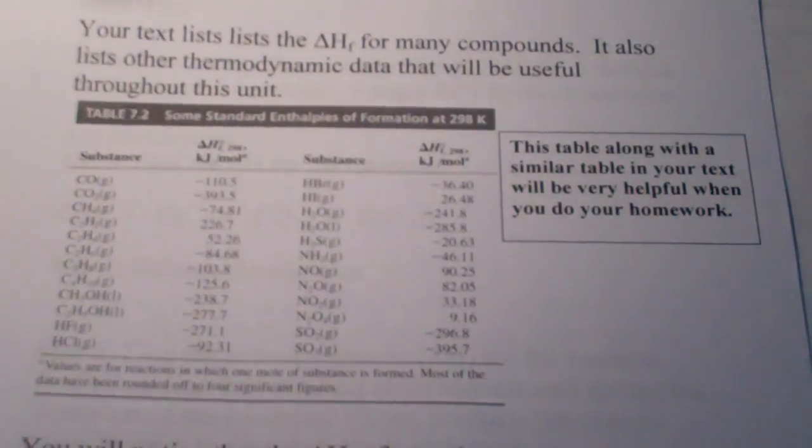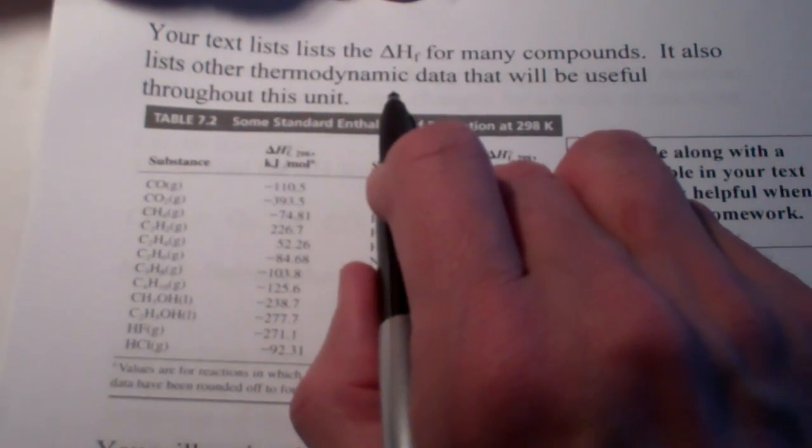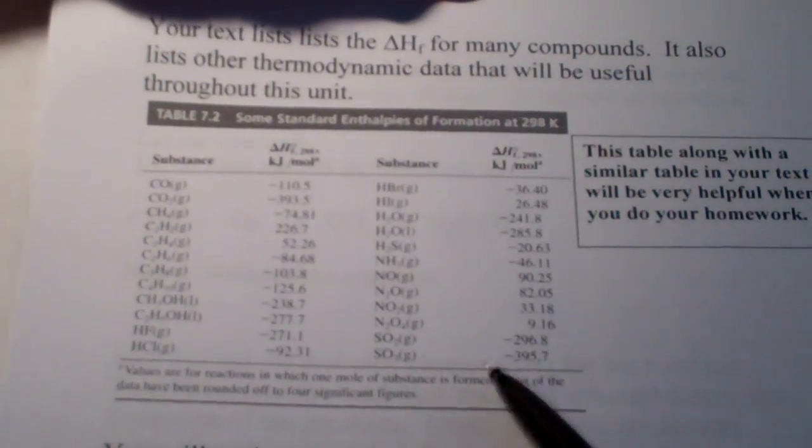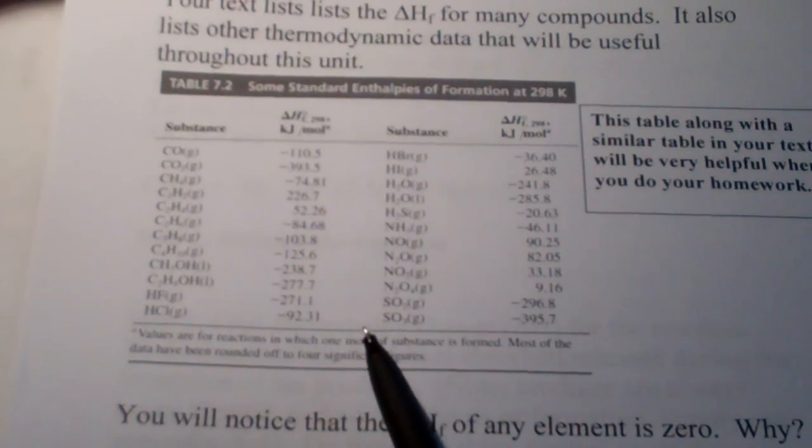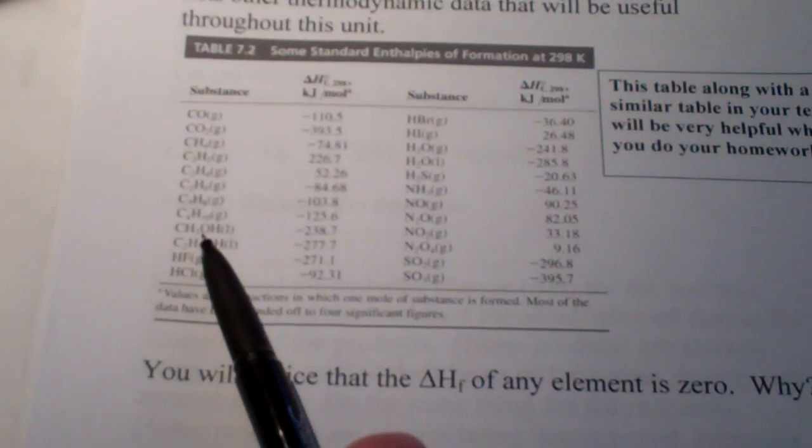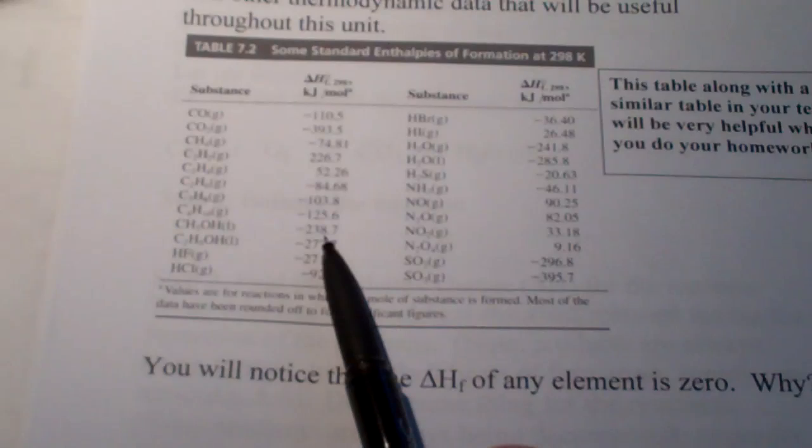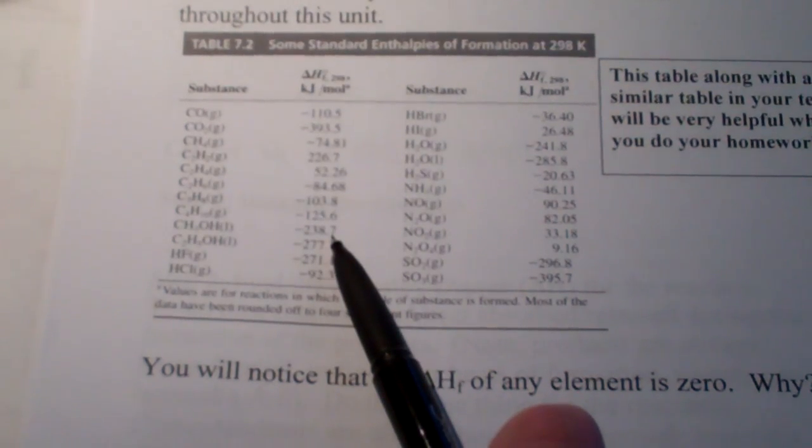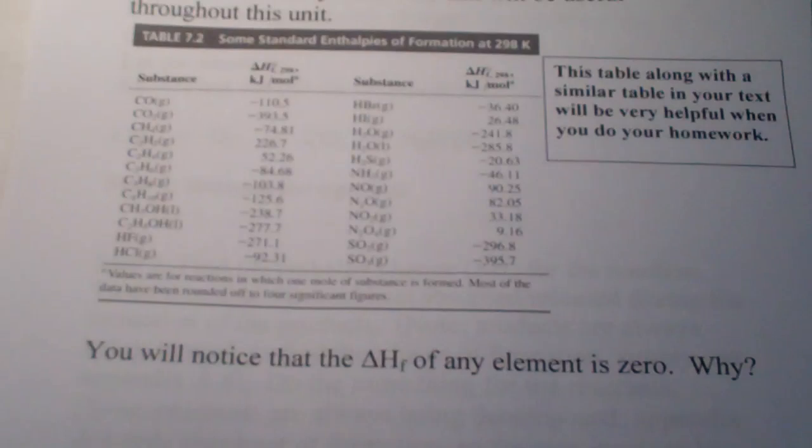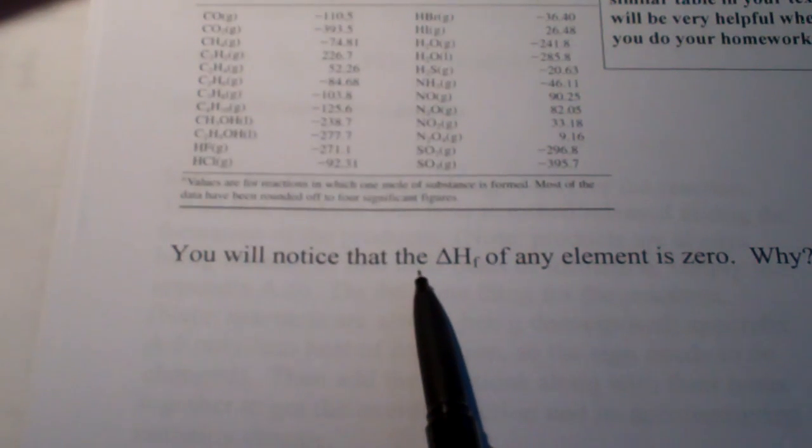All right. Now, let's just finish this page for the day. Your text will list the heat of formation for many compounds. It will also list other thermodynamic data that we're going to be talking about in this chapter. For right now, we'll just take a look at this table here. This is standard enthalpies of formation of some common compounds. So if we look at one that maybe we just talked about, CH3OH, we have the heat of formation as being negative 238.7 and our data, we just used 238.5. So you'll notice that some data tables, we get a tiny variation, but don't worry about that. This table along with a similar table in your textbook will be helpful when you do your homework.